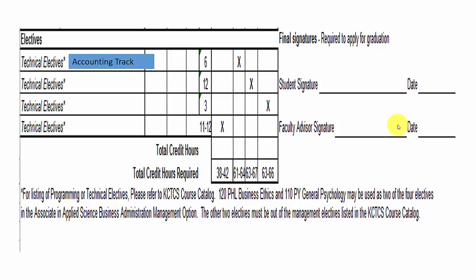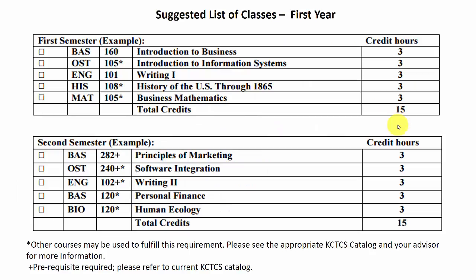Here is a suggested list of classes for the accounting track. In the first semester of year one, I'd suggest Introduction to Business, a computer class such as OST 105 or CIT 105 (note a star means other courses may fulfill this requirement — check the catalog), English 101, some type of history class, and math — either MAT 105 or MAT 150 if you plan to transfer. Second semester of year one: principles of marketing, a second computer class, English 102, personal finance, and a science class such as BIO 120 Human Ecology.